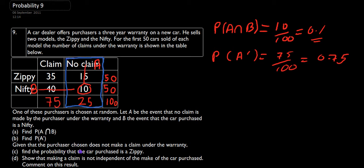So we want to find the probability that the purchased car is a Zippy. So that's these 15. So we want to look at the probability that we get a Zippy given that A has happened, that no claim is made.